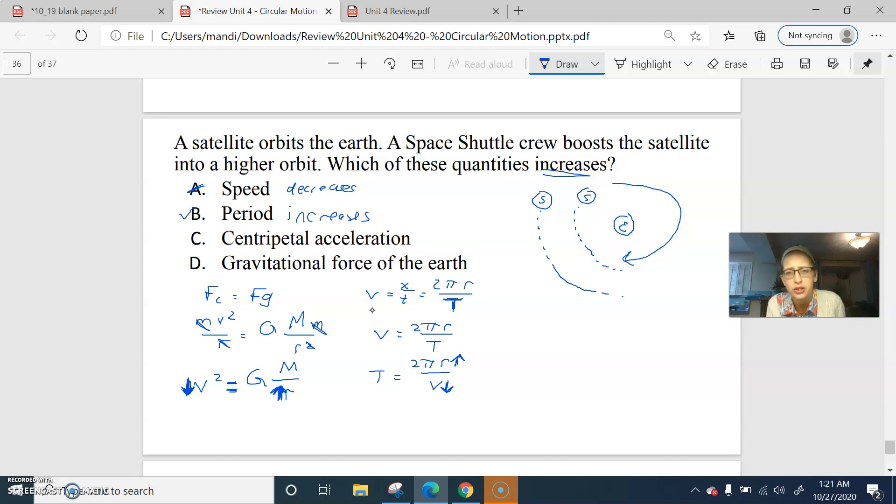I like that answer, but let's look at the others. Centripetal acceleration is v squared over r. The velocity decreased and the radius increased. So that went down, that decreased. So I don't think that one.